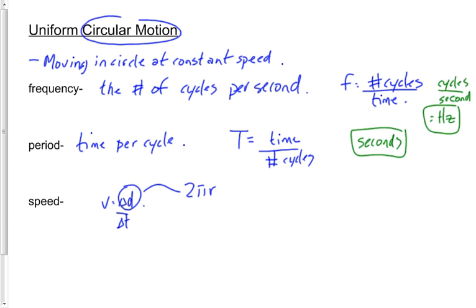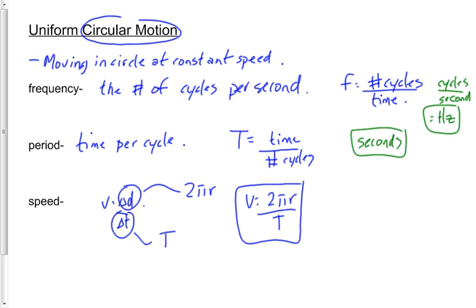If the distance around the circle once is the circumference, the time around the circle once is the period — we just talked about it. So the speed of an object undergoing uniform circular motion is 2πr divided by the period T: that's the circumference divided by the time it takes to go around once.